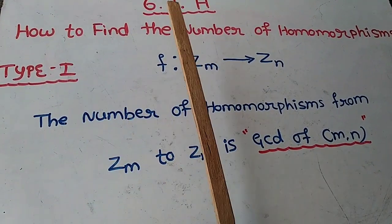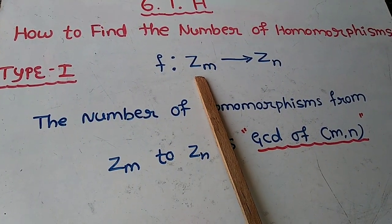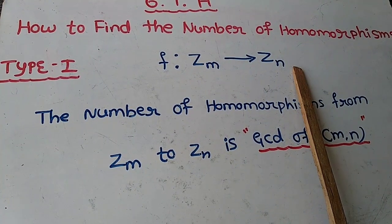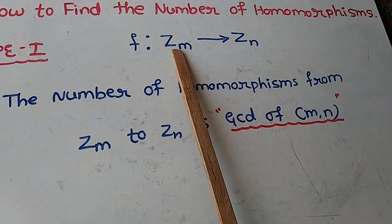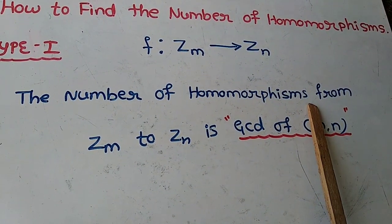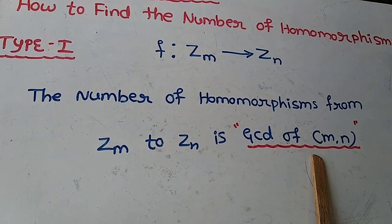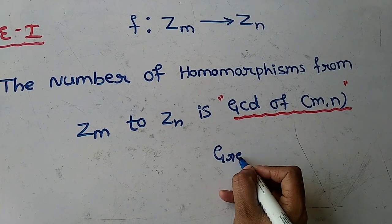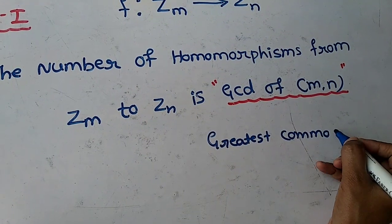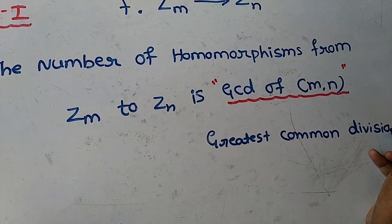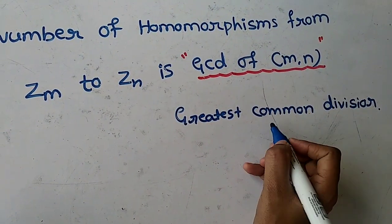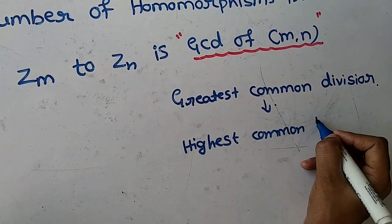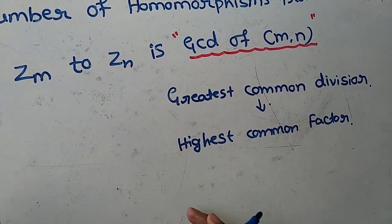Let's begin with the first type. If the given function is in the form f from ZM to ZN, then the formula for finding the number of homomorphisms is GCD of M comma N — that is, the Greatest Common Divisor, also known as the HCF or Highest Common Factor.